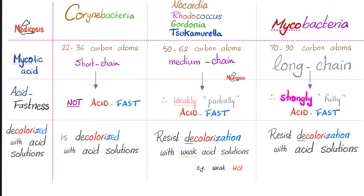Is this acid-fast smear test specific for Mycobacterium tuberculosis? No. All the mycobacteria are acid-fast — strongly acid-fast, fully acid-fast. Some fungi are acid-fast. Cryptosporidium oocysts are acid-fast. Moreover, Nocardia, Rhodococcus, Gordonia, and Tsukamurella are weakly acid-fast or partially acid-fast.